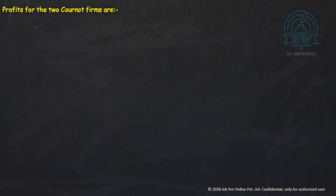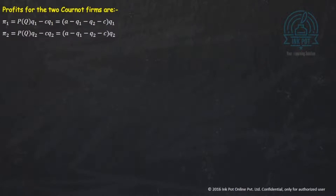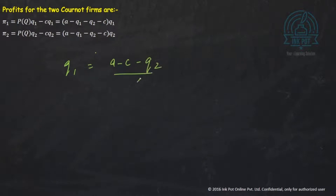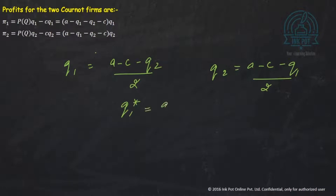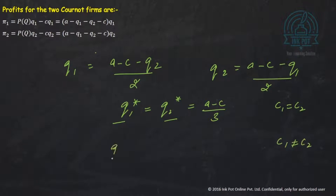Now in the Cournot model, we have Q1 = (A minus C minus Q2) / 2 and Q2 = (A minus C minus Q1) / 2. When you solve these two reaction curves simultaneously, you get Q1 star equals Q2 star equals (A minus C) / 3. These come out the same because C1 and C2 are equal. If C1 and C2 were not equal, then Q1 star and Q2 star would also not be equal.